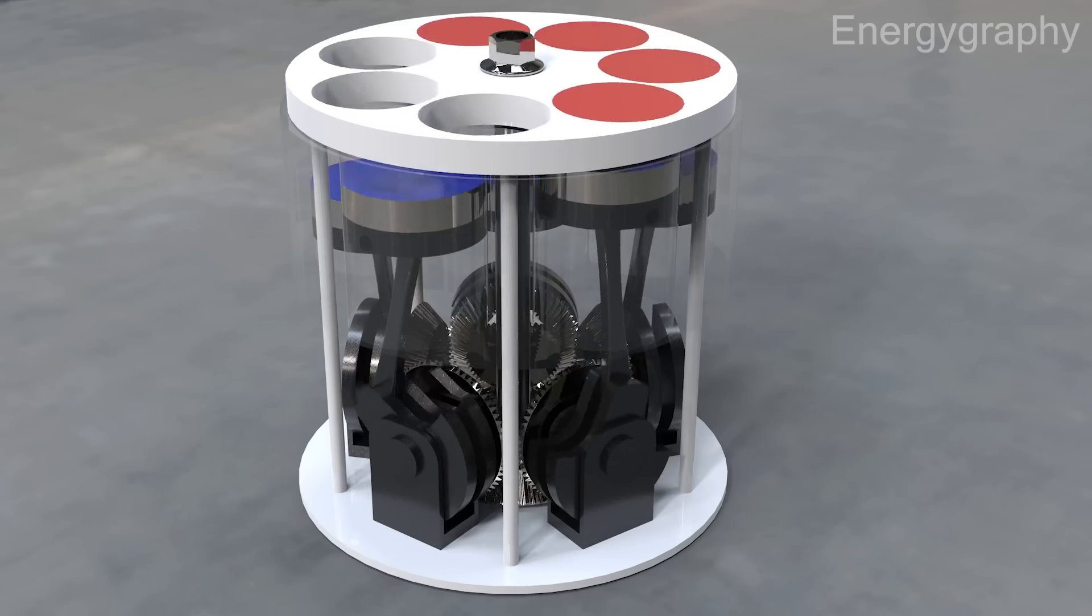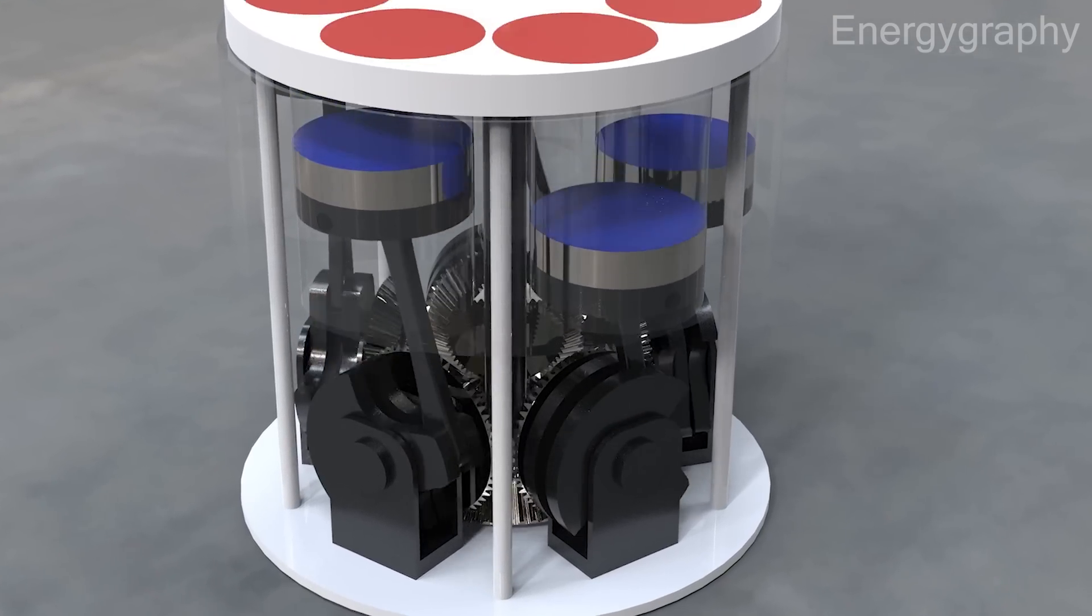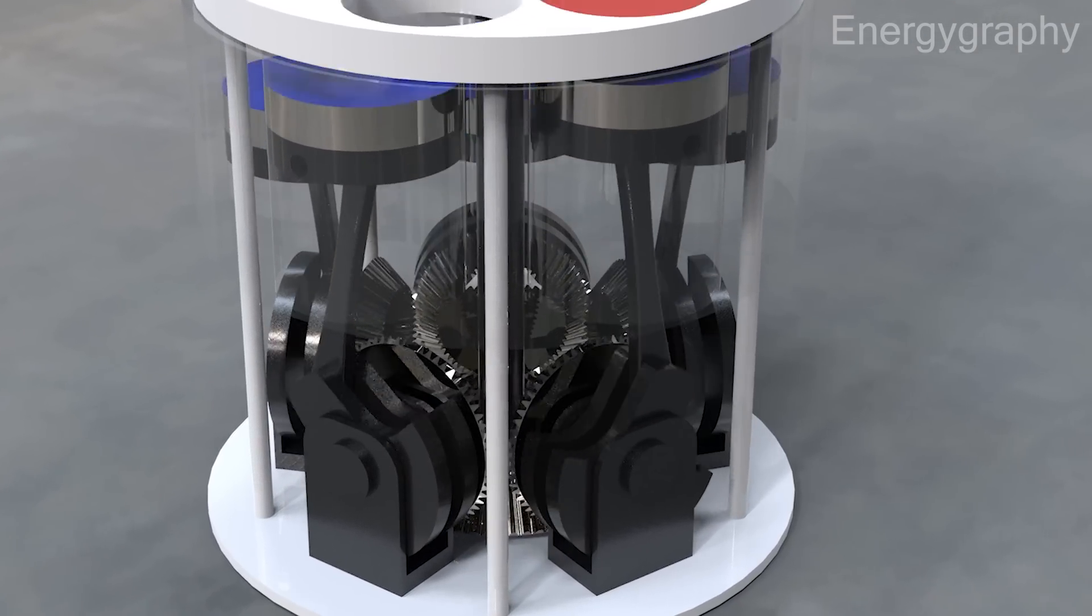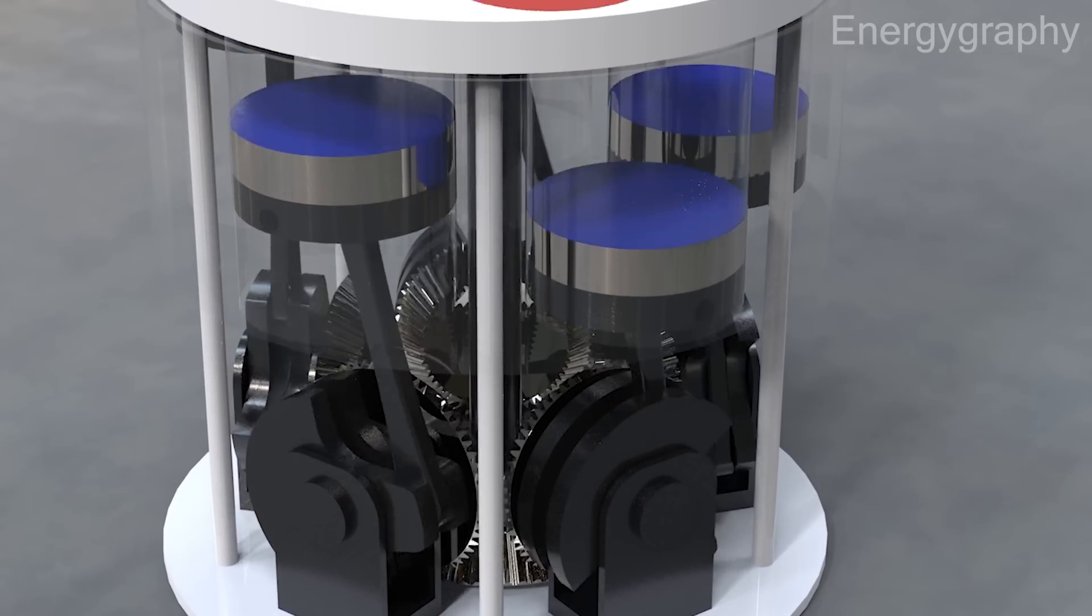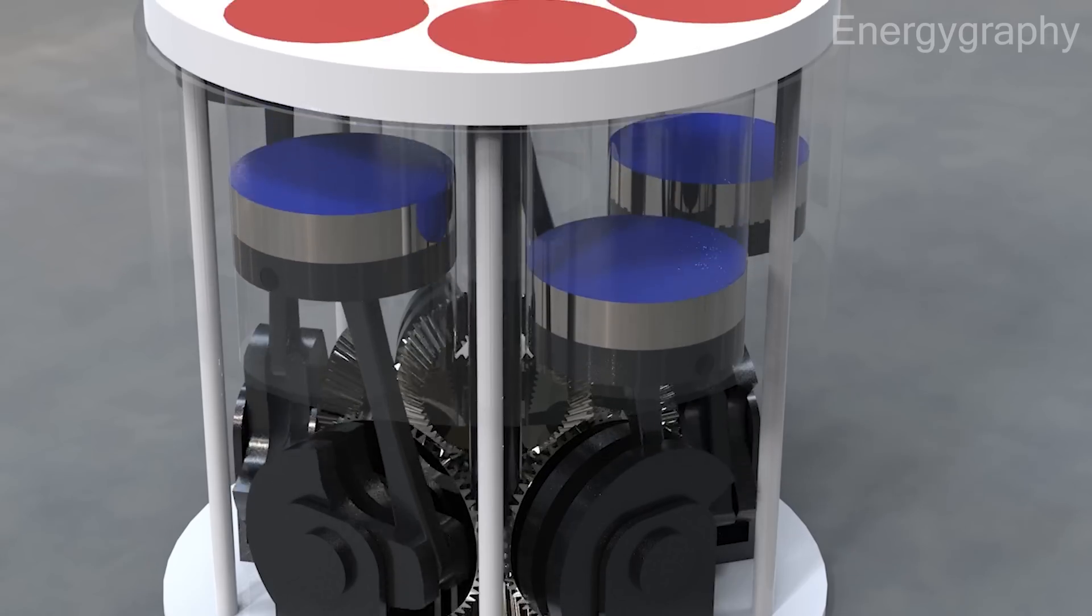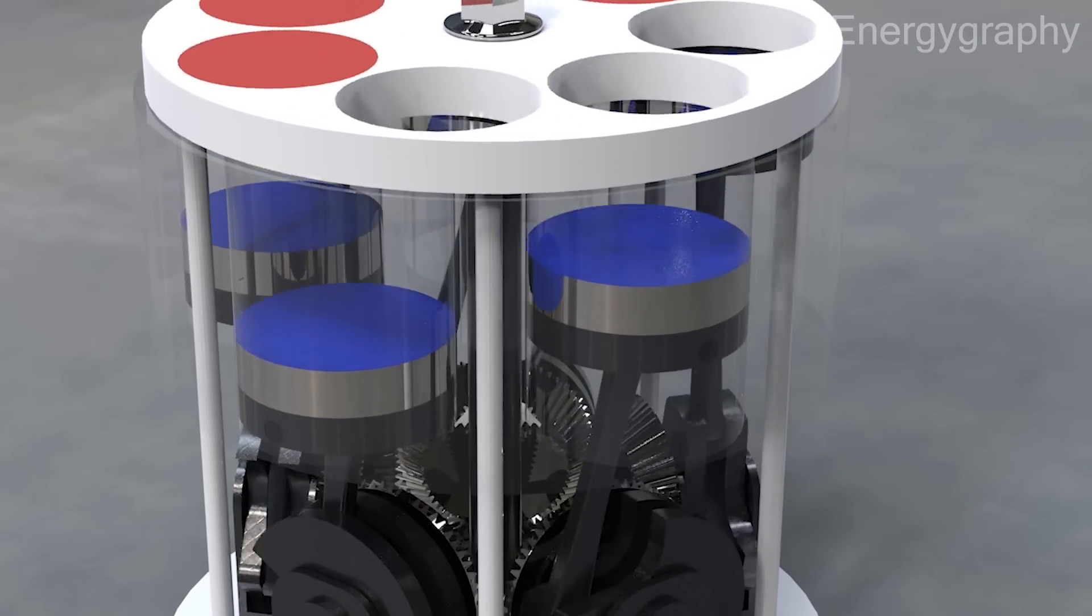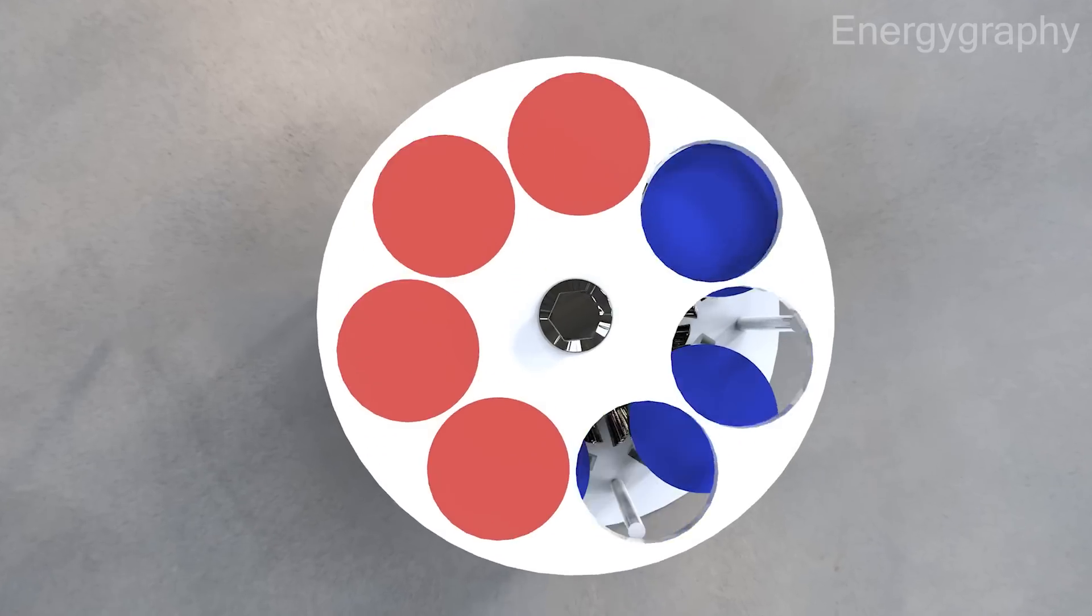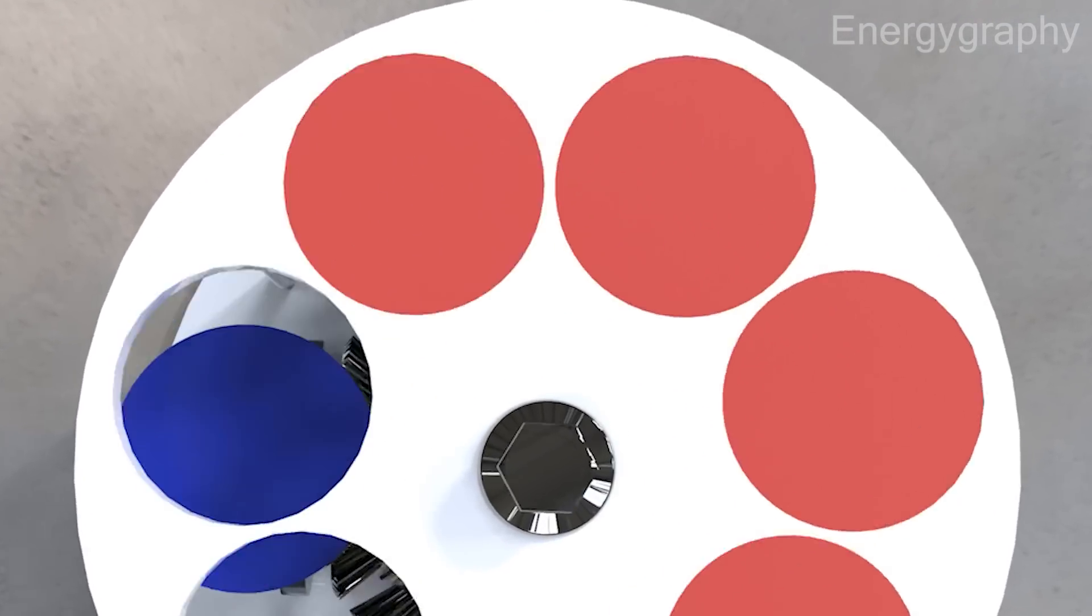So how does it work? The answer lies in the unique design of the engine, which leverages the natural properties of magnets to create rotational energy. By arranging magnets in a specific configuration and carefully controlling their interactions, the engine is able to produce a steady flow of energy that can be harnessed to power all sorts of devices and machinery.